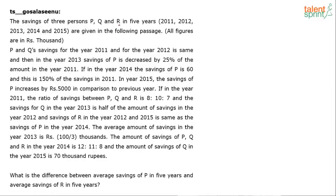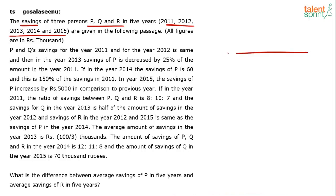We are given the savings of three persons P, Q, and R over five years — 2011, 12, 13, 14, and 15 — in the form of a passage. All figures are in rupees thousands. We need to extract this data, refine it, and get it into a simple tabular form.